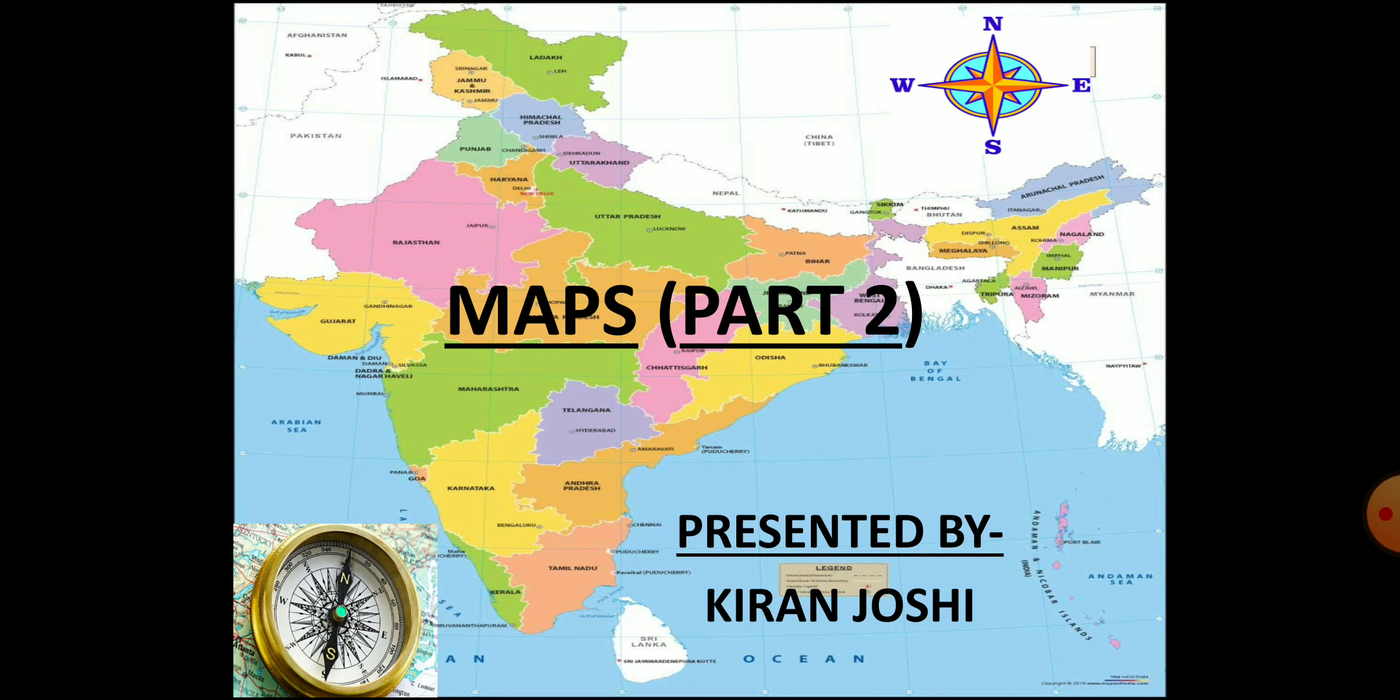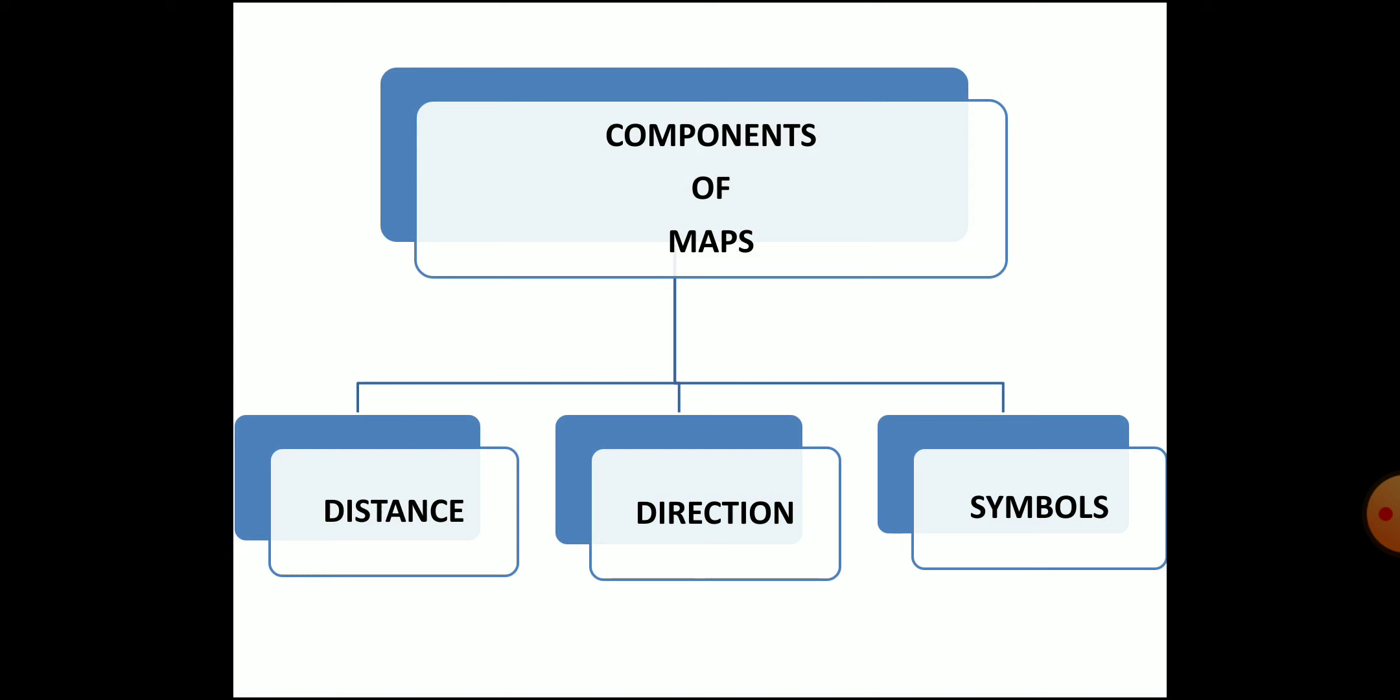Dear children, in the previous video of this chapter, we learnt about the difference between a globe and a map, types of maps, and about one of the three components of maps, that is distance. In the present video, we will learn about the remaining two components of maps: direction and symbols.